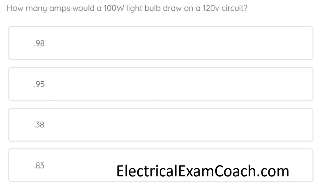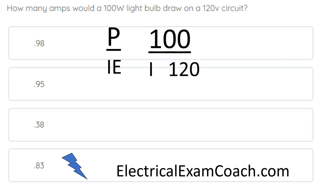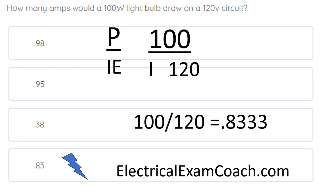Electrical question of the day: How many amps would a 100 watt light bulb draw on a 120 volt circuit? The correct answer is 0.83. For this one we're going to use Ohm's law — just plug in what we know. We have 100 watts on top and 120 volts, and we're solving for amperage. So all we have to do is divide: 100 divided by 120 gives us 0.8333. We're going to select D. Great job.